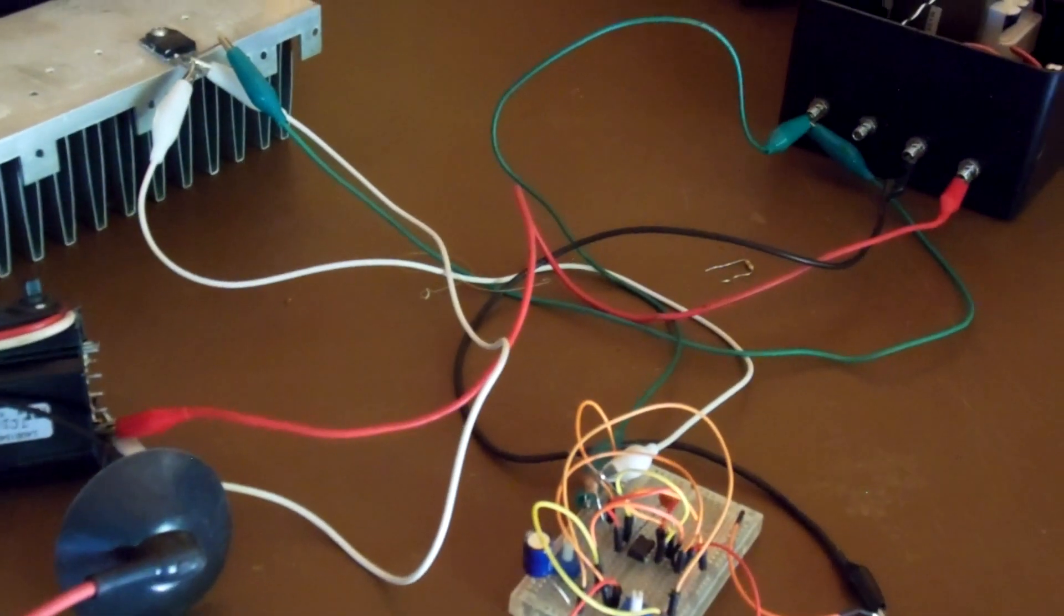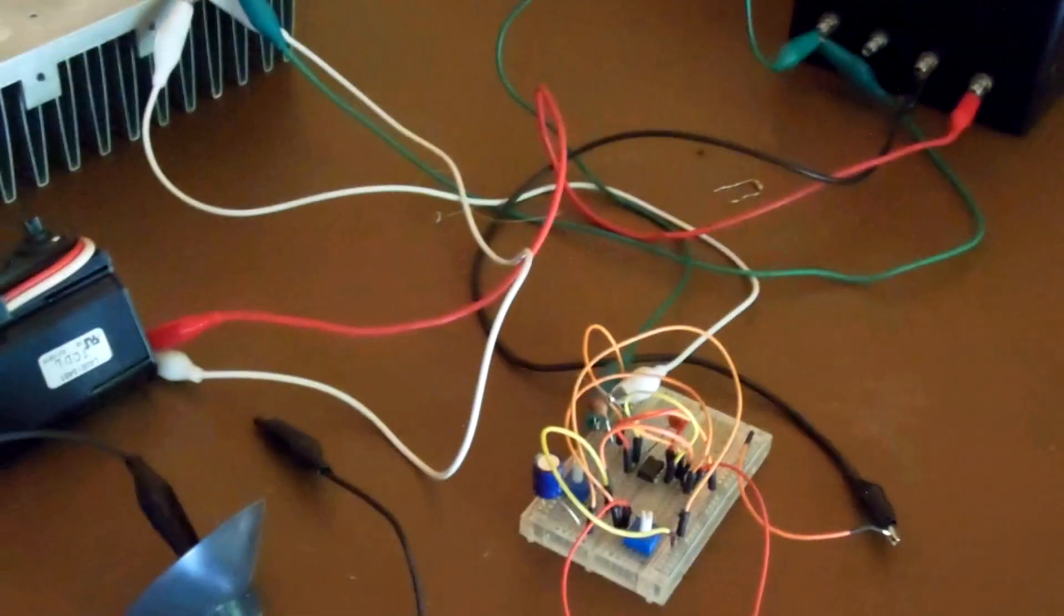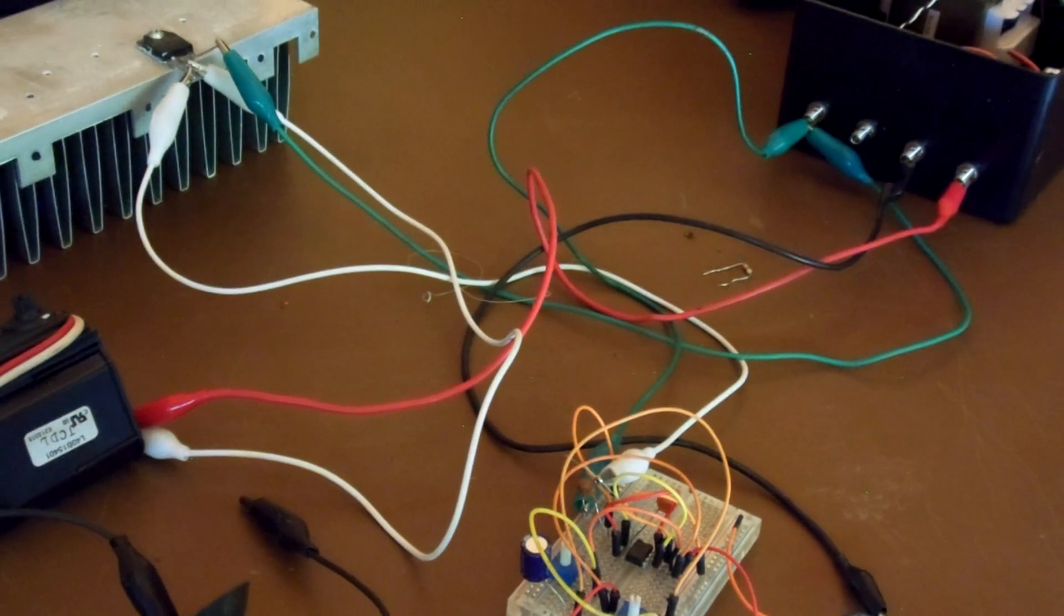By far the hardest part of this project is figuring out the pinout to your flyback transformer. You can try Googling the part number. That probably won't work. Usually what I try to do is find two pins that have a really low resistance between them and try them. For whatever reason, with this flyback, actually flipping the leads or flipping the polarity actually solved the problem that I was having. So you can try that. You can try all sorts of stuff. Basically you experiment for a long time trying to figure out the pinout.